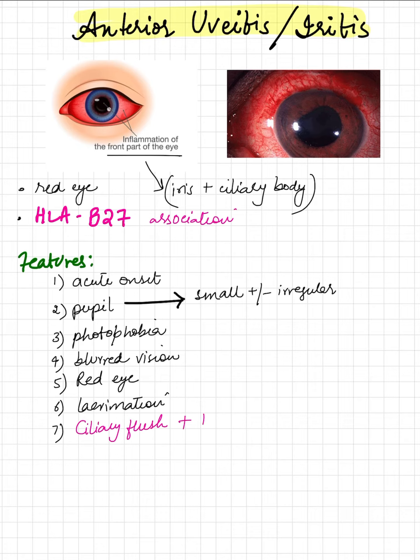Hypopyon, which is pus and inflammatory cells, can be seen in the anterior chamber. Visual acuity initially is normal and progressively impairs.